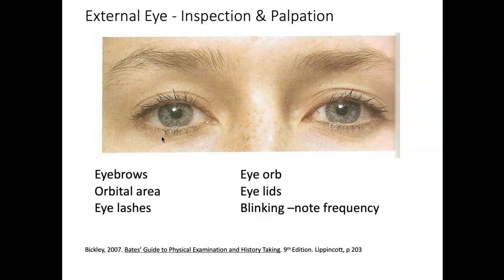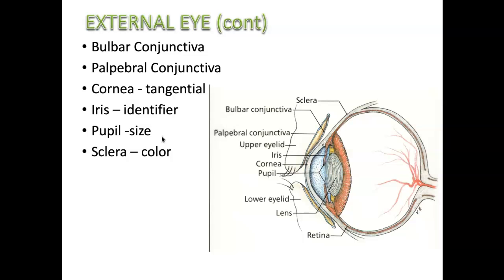Remember we're always going to start with inspection. We don't do much palpation with the eyes. Inspect the eyebrows — make sure they're symmetrical with no issues. Look at the orbital area, eyelashes, the bulb of the eye, and the eyelids. Make note of the frequency of blinking. Review the structures: the conjunctiva, the cornea which is the clear lens, the iris which is the colored part, the pupil which is the dark center, and the sclera, the white part that connects into the cornea.